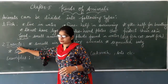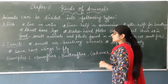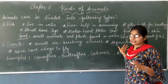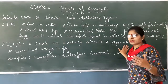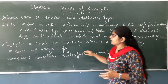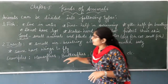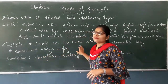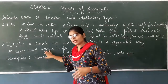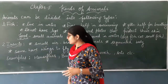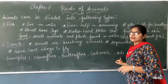The next type is insects. They are small, air-breathing animals whose body is segmented. They have three pairs of legs and one pair of antennae. Some insects also have wings that help them fly. Examples include house flies, butterflies, cockroaches, and ants.